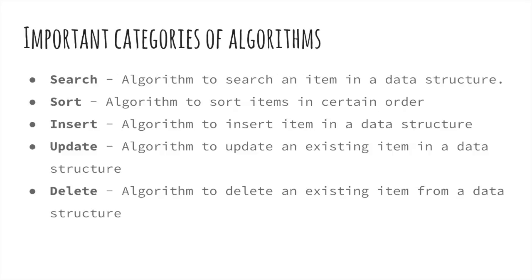From a data structure point of view, the following are some important categories of algorithms. Searching algorithms are used to search an item in a data structure. Sorting algorithms sort items in a certain order. Insert algorithms insert items into a data structure. Update algorithms update an existing item in a data structure. And delete algorithms delete an existing item from a data structure.